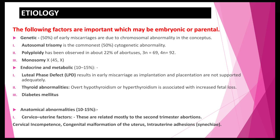Regarding etiology, the following factors may cause abortion. First is the genetic cause — 50 percent chances of miscarriage due to chromosomal abnormalities. Autosomal trisomy is the commonest, accounting for 50 percent of cytogenic abnormalities. Polyploidy has been observed in about 22 percent of cases.